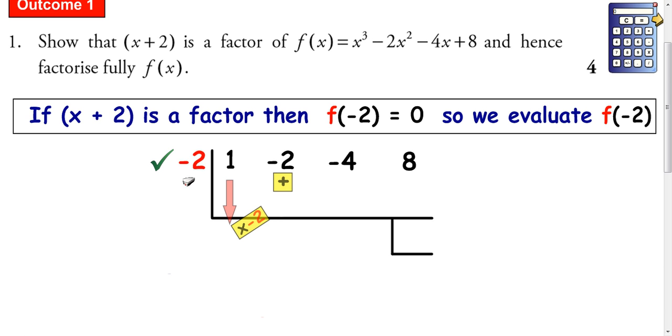The process to do this synthetic division table is to drop the 1 down. Whatever number is up here, drop it down. And then we multiply by the negative 2. So 1 times negative 2 is negative 2, and then you add that to the number above. So negative 2 add negative 2 is negative 4. And then again you multiply by this number here. So that's going to be negative 4 times negative 2 gives you plus 8. You add, that's going to be 4. Then you multiply by negative 2, gives you negative 8, and you add to get 0.